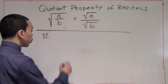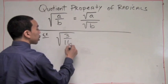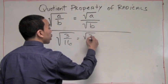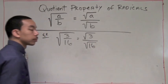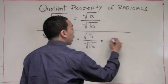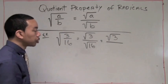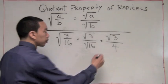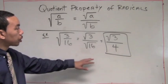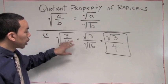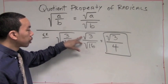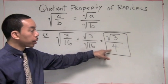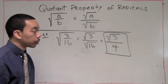Let's try another example. Given the square root of 3 over 16, we apply the quotient property of radicals. The quotient property says we can rewrite it as the square root of 3 over the square root of 16. We cannot take the square root of 3, so we write that as is. However, the square root of 16 is 4. So our solution is the square root of 3 over 4. We applied the quotient property: we rewrote the numerator as the square root of 3 and the denominator as the square root of 16, took the square root of 16 because it's a perfect square, and left the square root of 3 since it's not a perfect square and can't be broken down further.